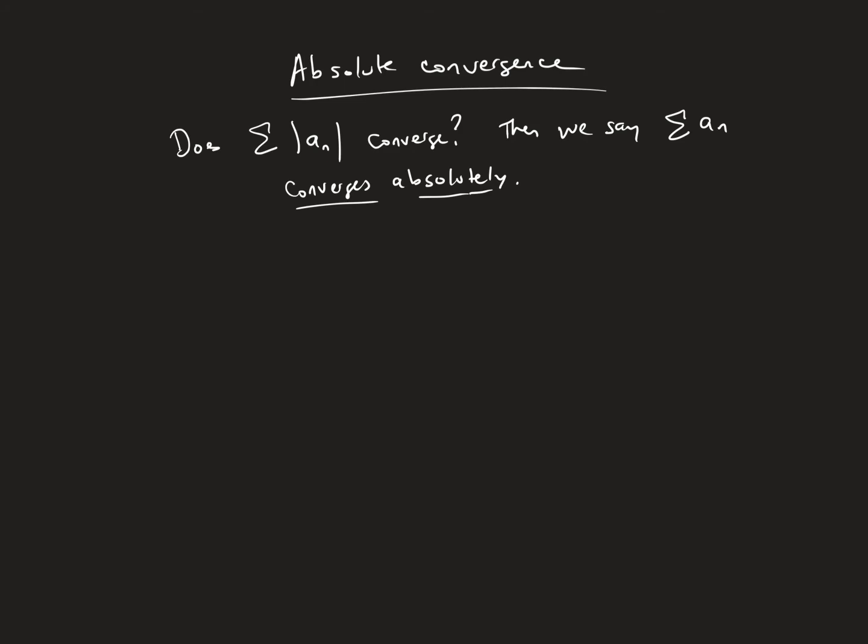If we talk about something converging absolutely, you might think of that as sort of an emphasis word, that it converges absolutely all the time. But really, that's not what it means. When we talk about converging absolutely, what that means is the absolute values of the series converge. So if we're checking for absolute convergence, we're looking at taking away all the signs of the terms and asking if the remaining series converges.